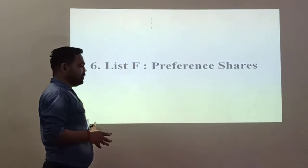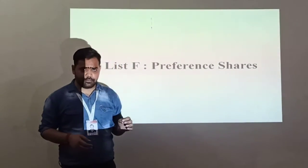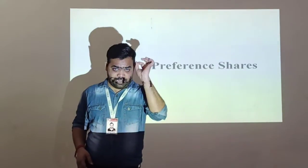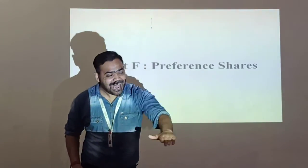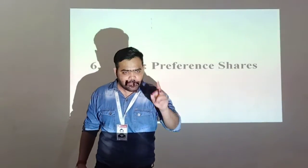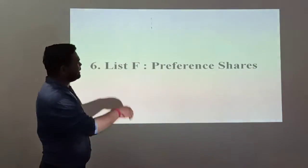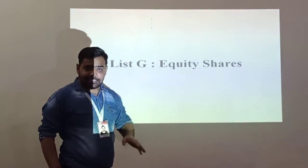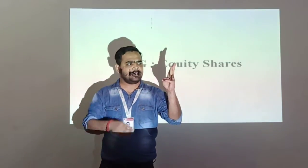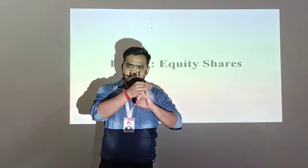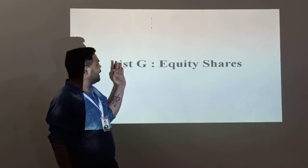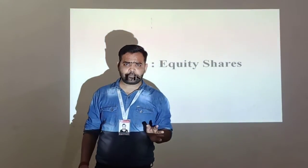List F - preference shareholders. After paying List E, the balance amount is used for the preference shareholders, and only if there is any balance can we pay them. After paying the preference shareholders, if there is any balance, we use it for the equity shareholders, which is List G. So List G is the last list - List A and B for assets, C, D, and E for creditors, and List F and G for shareholders.